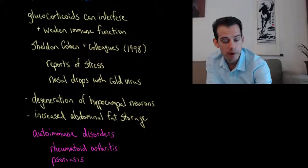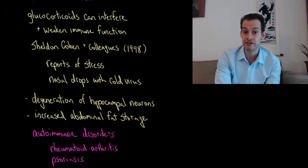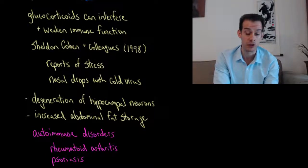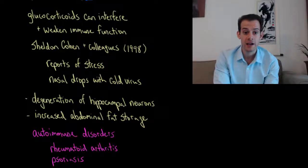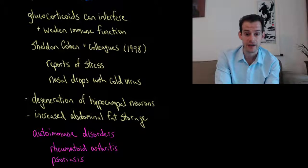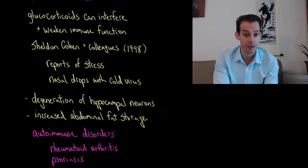What we find is that part of the stress response involves the release of these steroid hormones called glucocorticoids. And these mobilize energy and increase glucose in the bloodstream. But the release of glucocorticoids and the glucocorticoids circulating in the bloodstream can interfere with the immune system's functioning.